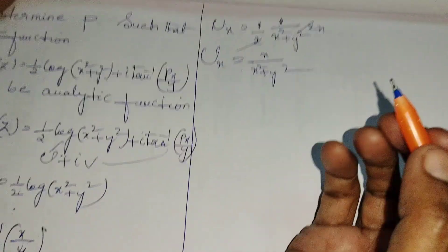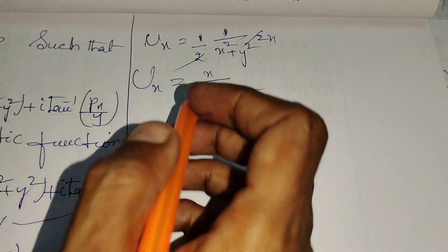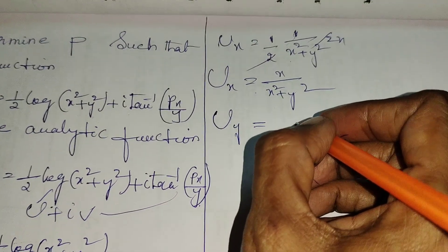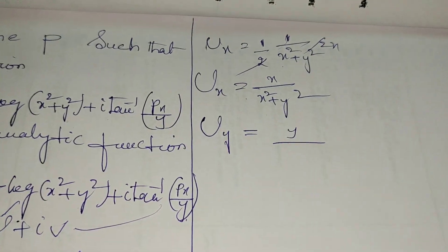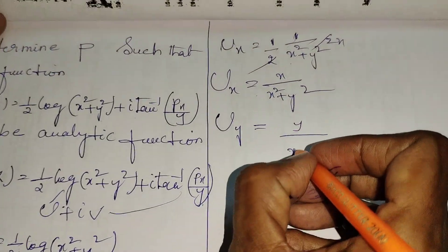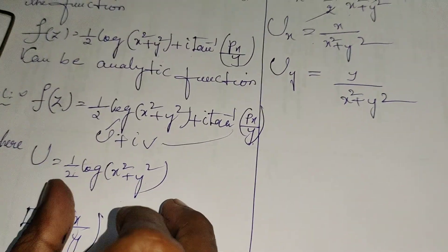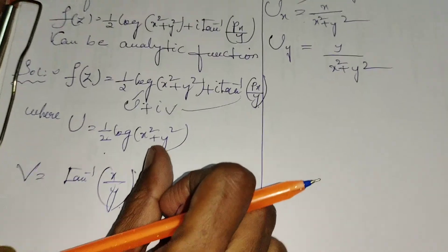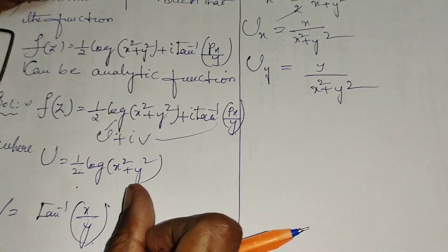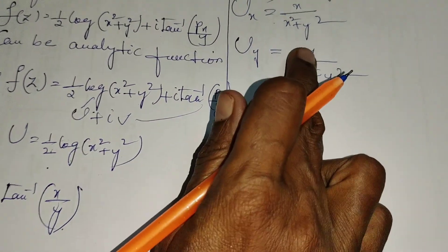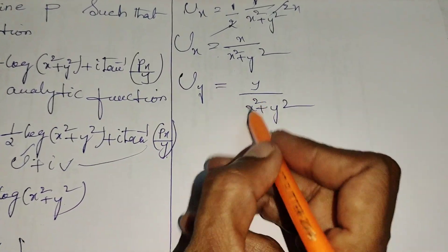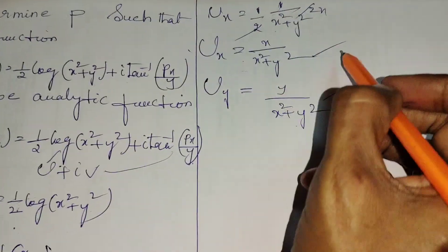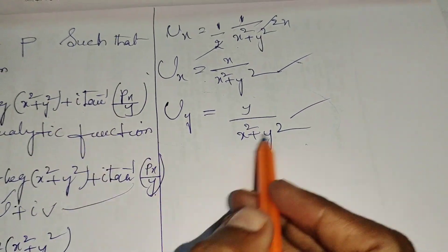Next, find uy — differentiation of u with respect to y. The 1/2 factor applies, and differentiating x² + y² with respect to y gives 2y. The 2s cancel, giving uy = y/(x² + y²).